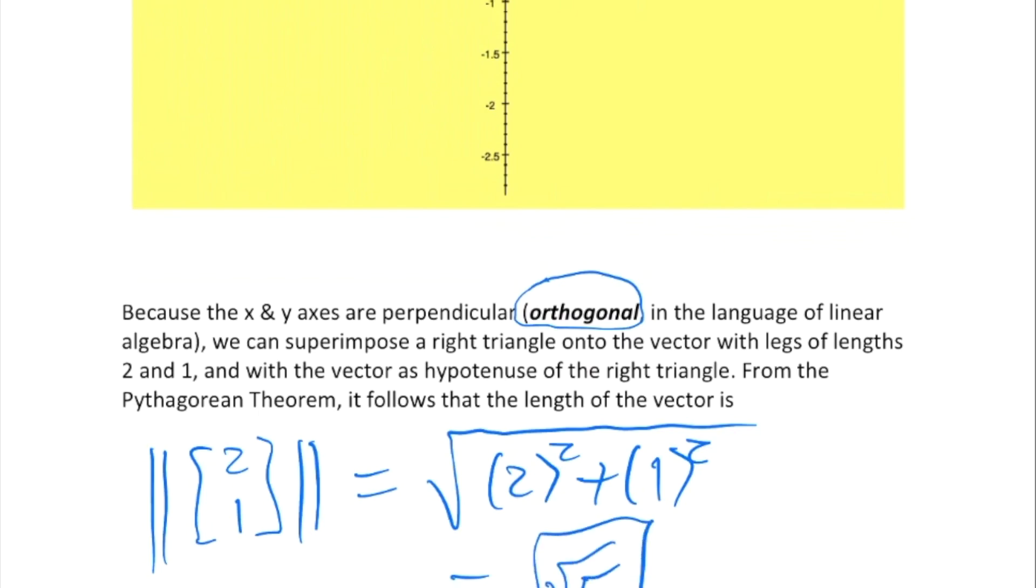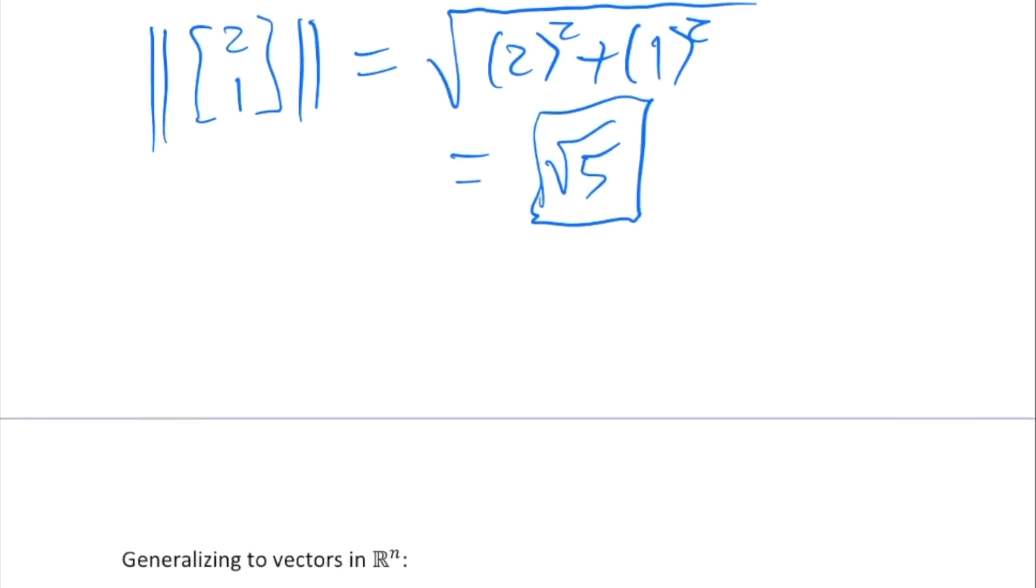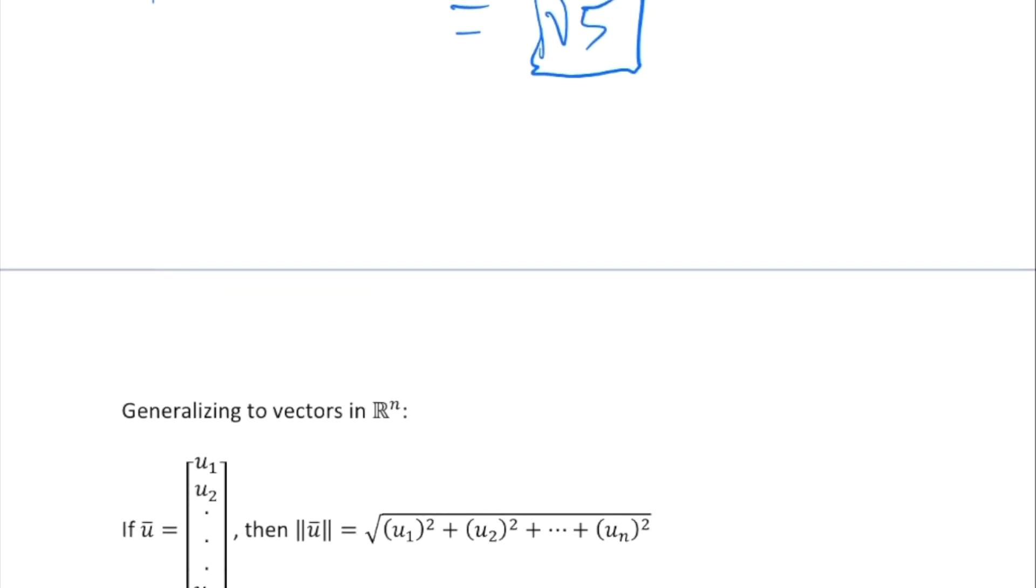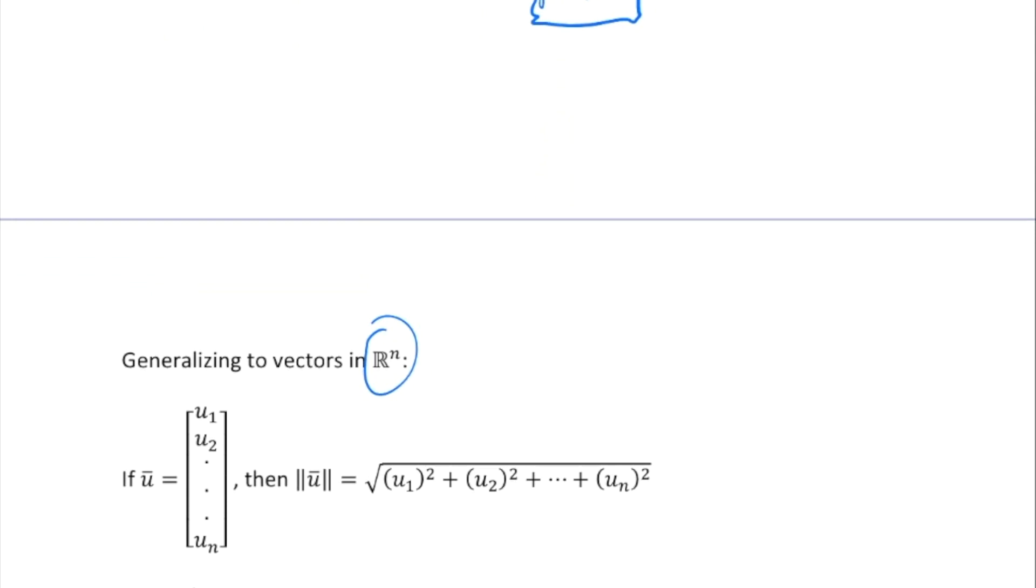We can generalize to vectors in Rⁿ for higher dimensions. If u has components u₁, u₂, down to uₙ, then the magnitude of u is the square root of the sum of the squares of those components.